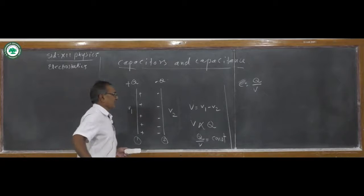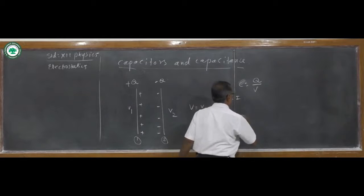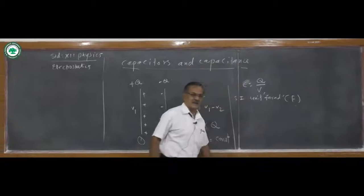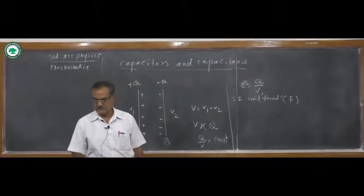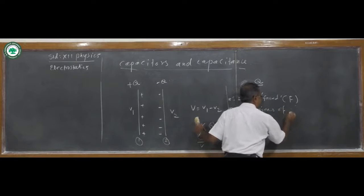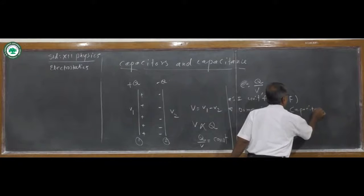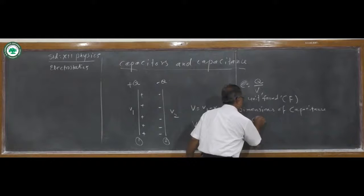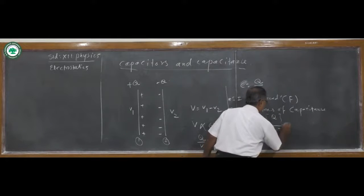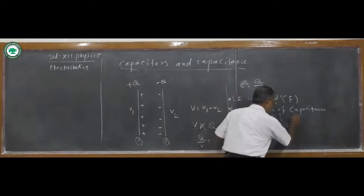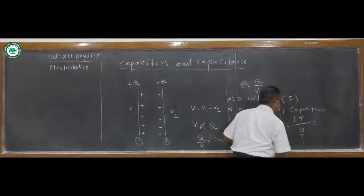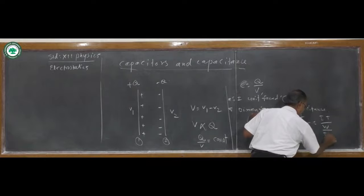The SI unit of capacitance is Farad. The dimensions of capacitance are written in square brackets as dimensions of Q upon dimensions of V. Charge is nothing but the product of current I and time T. Potential is nothing but work done per unit charge.